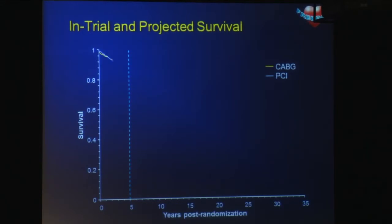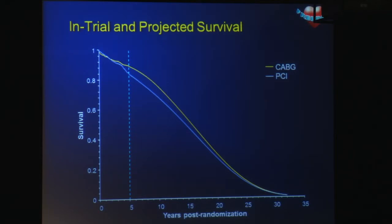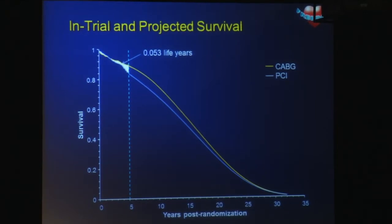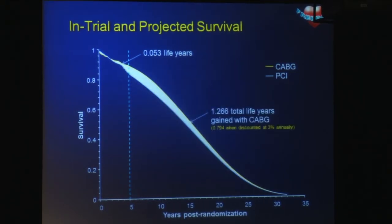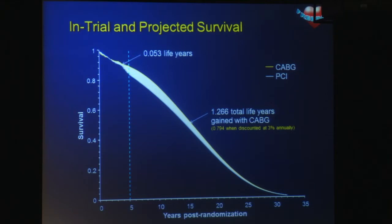This graph shows the in-trial survival experience through the first five years of the trial and then our projections over the course of the lifetime. The area between the two curves represents the life years gained with CABG. During the first five years, there were 0.053 life years gained with CABG, but over the course of the follow-up period, we get an accumulation of life years gained, largely due to the higher rate of death in the PCI arm, such that taking a lifetime perspective, there were actually 1.266 total life years gained with CABG.